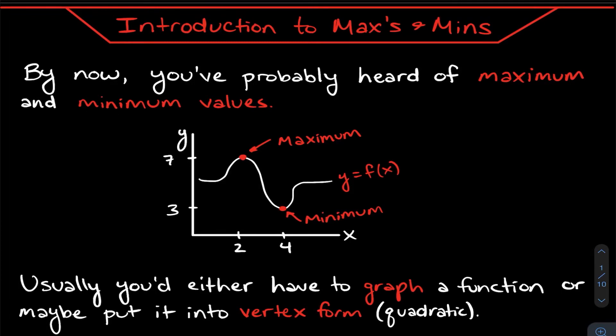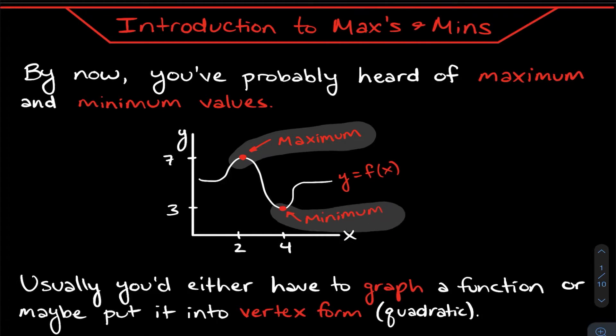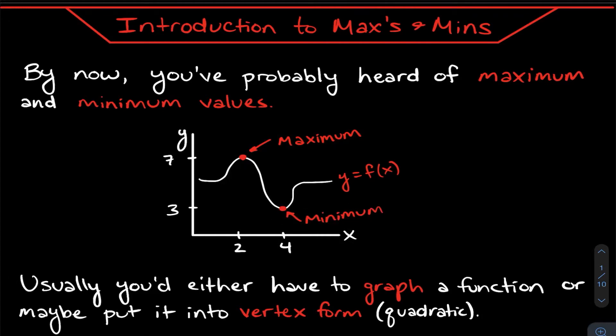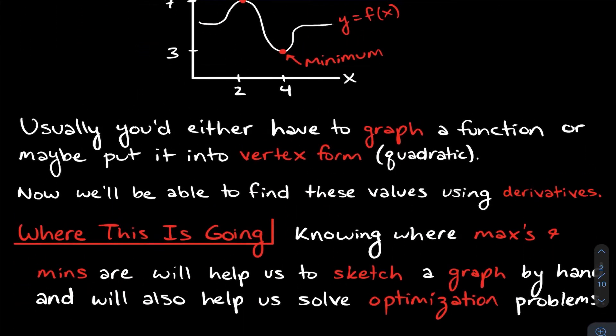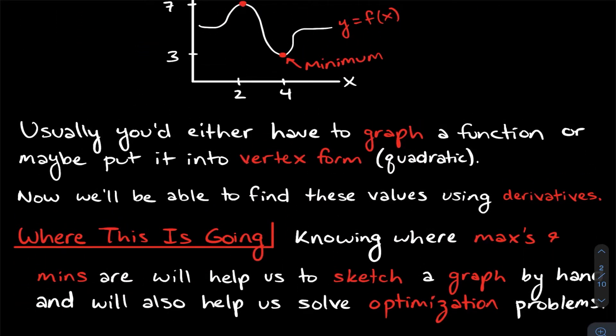Let's start with the introduction. You've probably done a lot of work with maximum and minimum values in algebra. Max values are the high points of the graph and min values are the low points. To find them previously, the process changed depending on the function — for a quadratic you'd use vertex form, for a sinusoid you'd use the midline and amplitude.